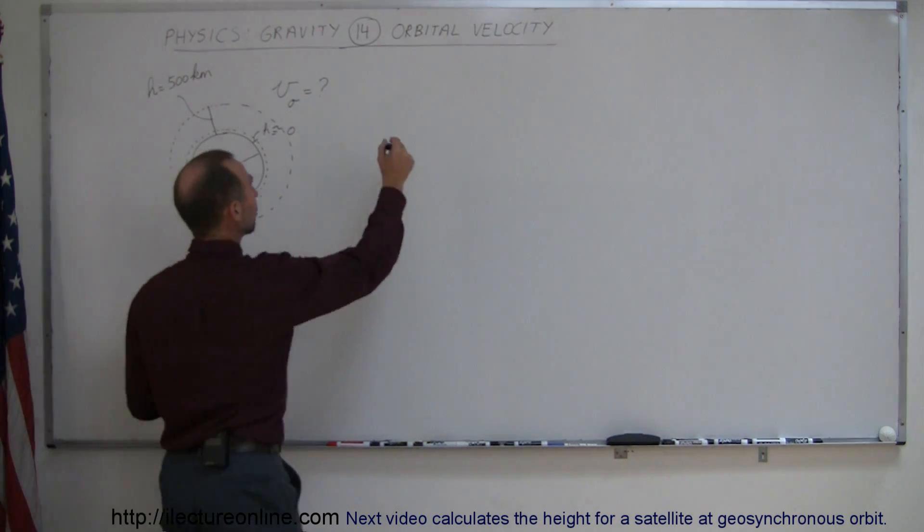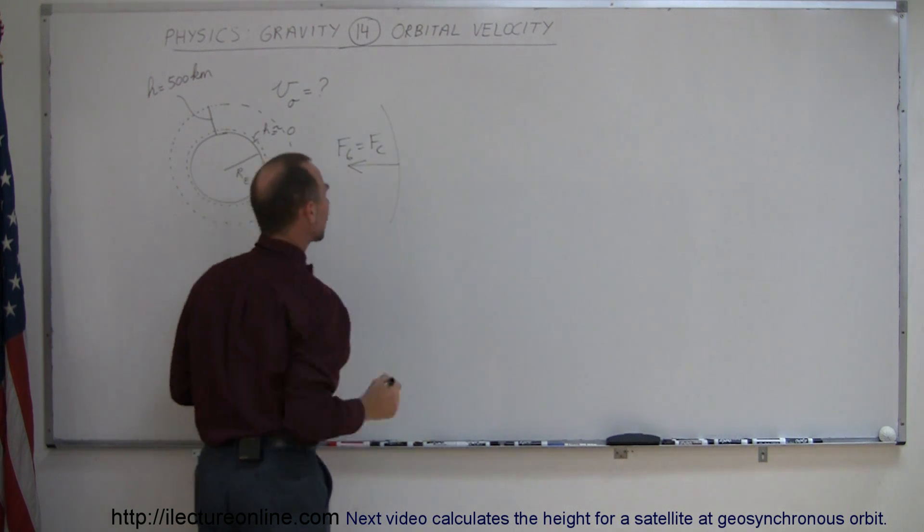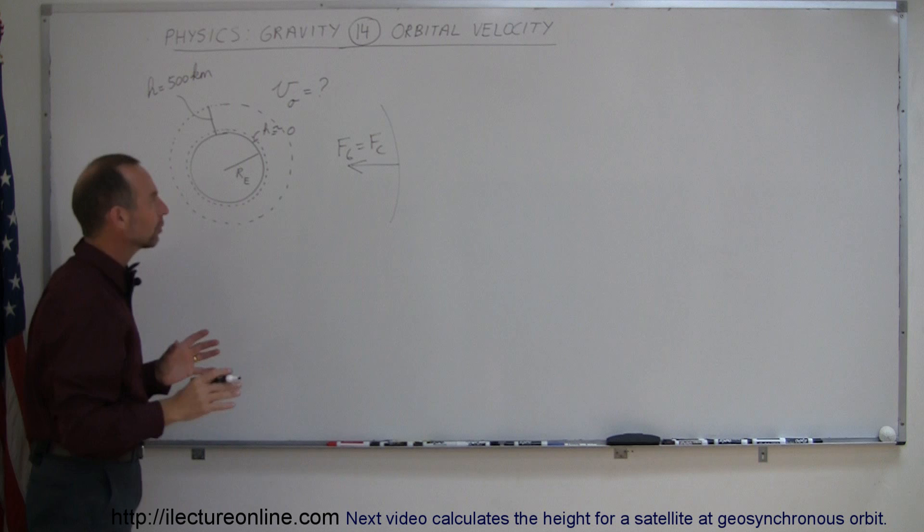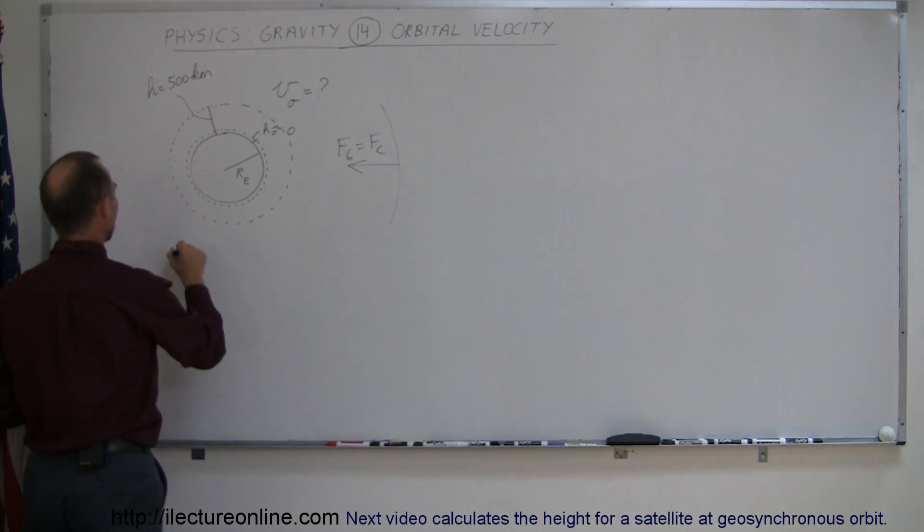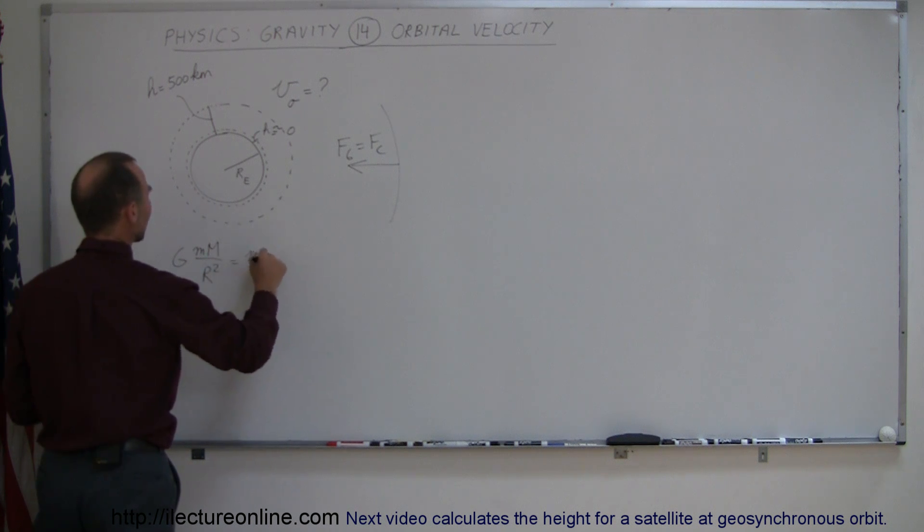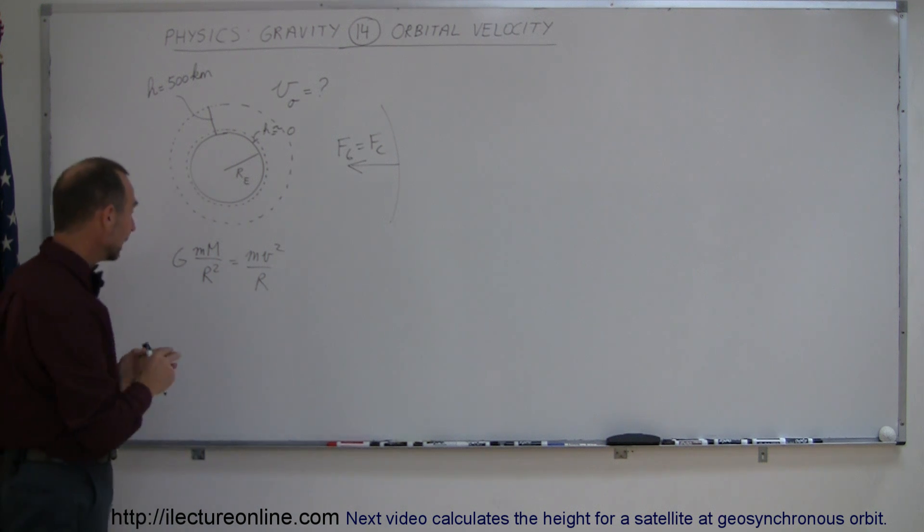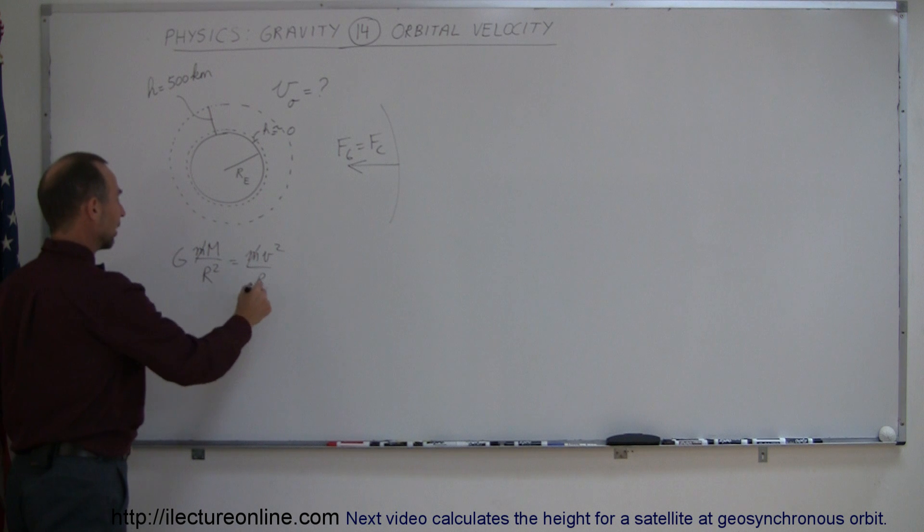As something travels around an orbit, we know that there's a force inward, which is the force due to gravity, and that is equal to the centripetal force. So we set those two equal to each other. We have Gm big M over R squared is equal to mv squared over R. The centripetal force is equal to the gravitational force. Then the mass of the satellite doesn't matter, that cancels out.